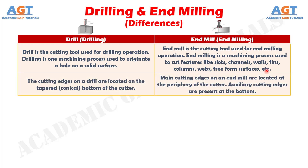Number two: the cutting edges on a drill are located on the tapered, conical bottom of the cutter, whereas main cutting edges on an end mill are located at the periphery of the cutter. Auxiliary cutting edges are present at the bottom.